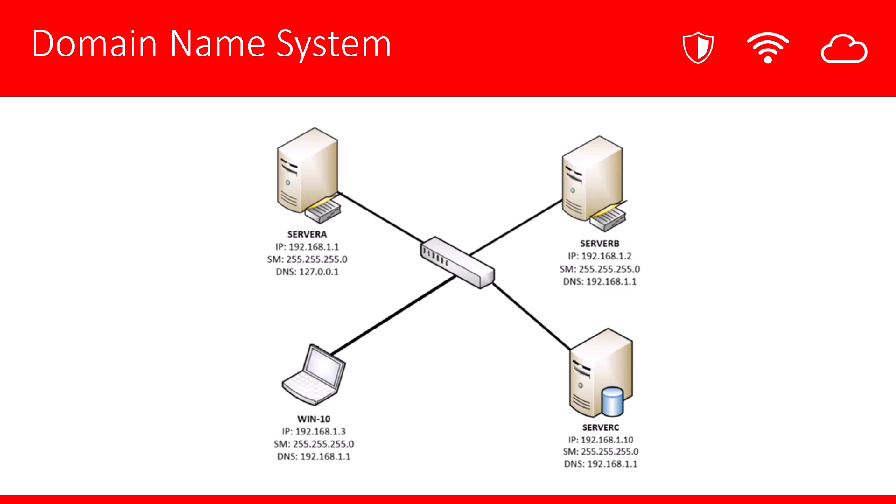In this video series, we've been building a network as we've been going along. We have two domain controllers, Server A and Server B, and today we're going to be adding DNS server, Server C. Server C has an IP address of 192.168.1.10. It's already domain joined and we're ready to install the DNS service. Once we install the DNS service, we will go through the configuration and set it up to transfer zones from either Server A or Server B. That'll allow Windows 10 to have more than one server that it can talk to with regards to DNS. Let's jump into the demonstration and start that configuration.